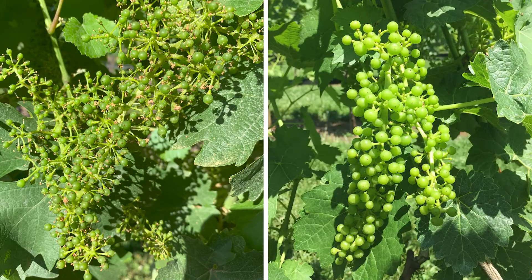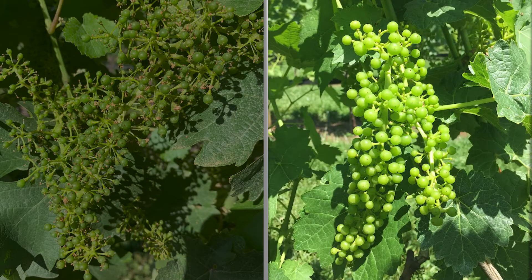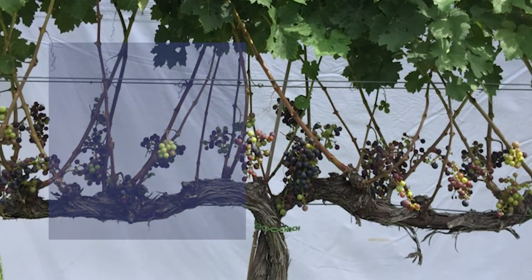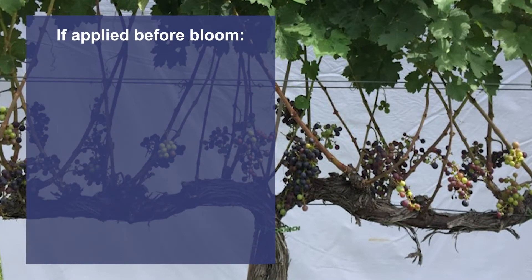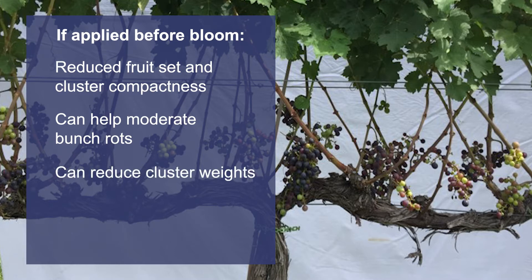Fruit zone leaf removal should be implemented after fruit set, between the BB size berry stage and P size berry stage. If leaf removal is applied too early or before bloom, the result can be reduced fruit set and cluster compactness, which can help moderate bunch rots in some cultivars. However, the decreased fruit set can reduce cluster weights, so it is not recommended in all cultivars or when a yield reduction cannot be tolerated.